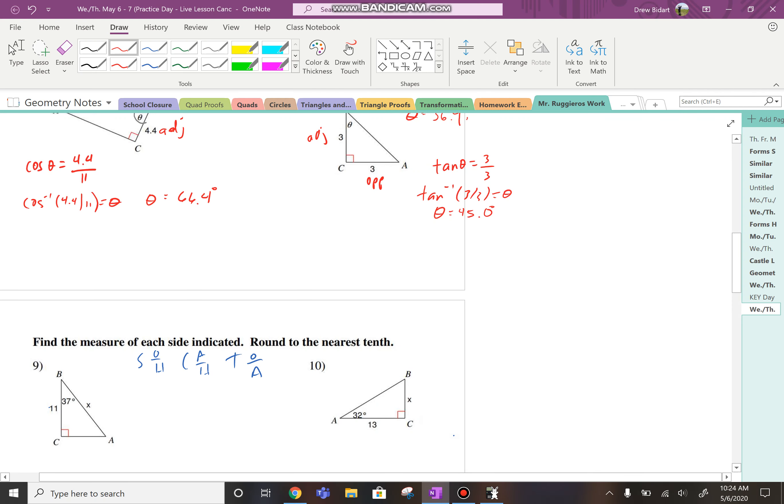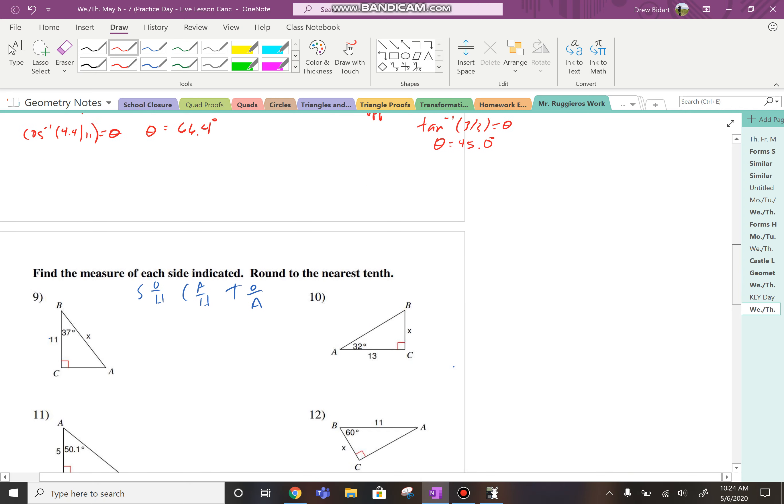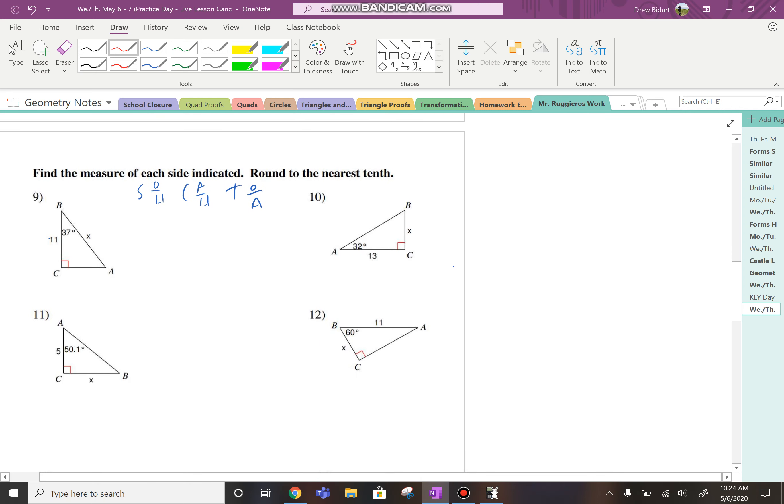Okay. In all these questions, we need to find the missing side. I have to label from the perspective of the given angle. From the angle of 37 degrees, X is the hypotenuse and 11 is the adjacent side. So that should be cosine. The cosine of the angle equals the adjacent over the hypotenuse.